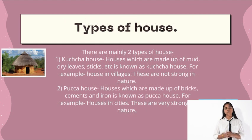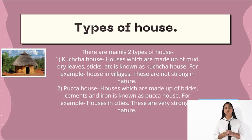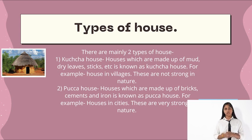There are mainly two types of houses. First is the kaccha house and second is the pakka house. Kaccha houses are made up of mud, dry leaves, sticks, etc. For example, houses found in villages. These are not strong in nature.